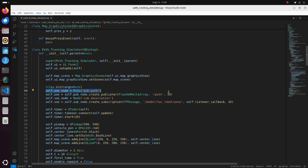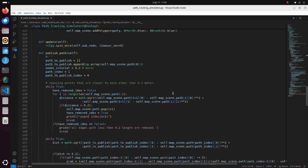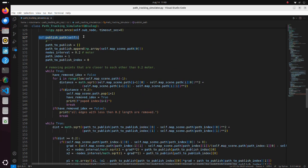We have created a new publisher which will publish the path when the publish path button is pushed. In the publish path function, we are refining the path, so that distance between each point will be 0.2 meters.